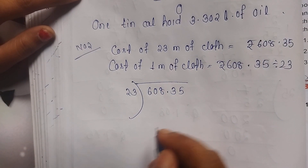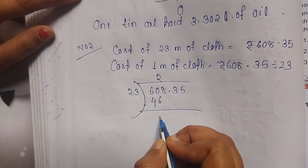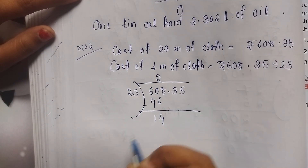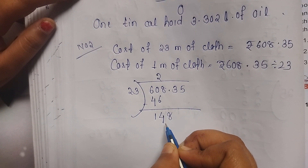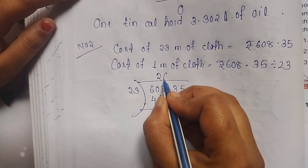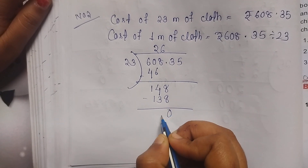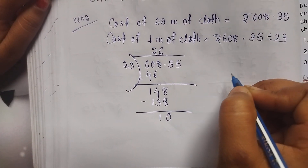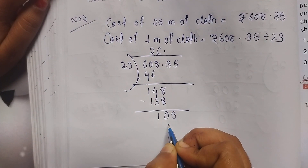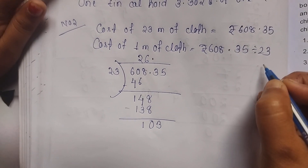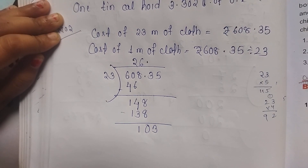Then 23 goes into 60: 2 times 23 is 46. Then 60 minus 46 is 14. We cannot subtract 6 from 0, so we borrow: 10 minus 6 equals 4, then 5 minus 1 is 4, and 5 minus 4 is 1, giving 14. Bring 8 down — now the number is 148. 23 times 6 is 138. Then 8 minus 8 is 0, 4 minus 3 is 1, 1 minus 1 is 0.